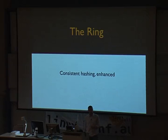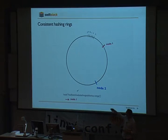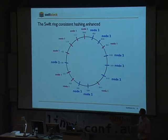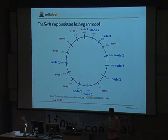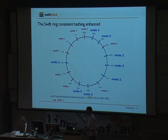Within Swift there's also the ring. Swift uses consistent hashing with some enhancements. The basic concept is that a request comes in and you figure out where it lives based on the hash of something. Swift divides the overall namespace — the key space — into equally sized chunks. This allows Swift to simply hash the name of an object, take the first few prefix bits, do a direct lookup, figure out what partition of the key space is needed, and then know exactly what storage nodes those are mapped to. This mapping of the key space to the storage nodes is the Swift ring.